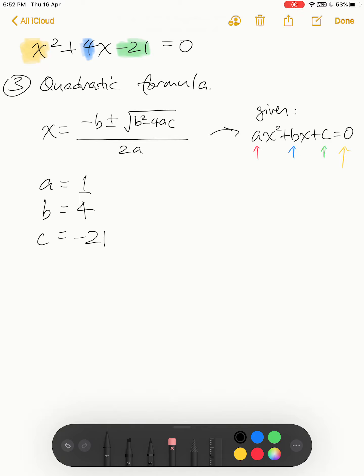Now we plug it into the formula: x equals negative—this is a good habit, every time you plug in a number put brackets—so negative b (b is 4) plus or minus square root of b² minus 4 times a times c. Make sure the square root covers everything, over 2a.